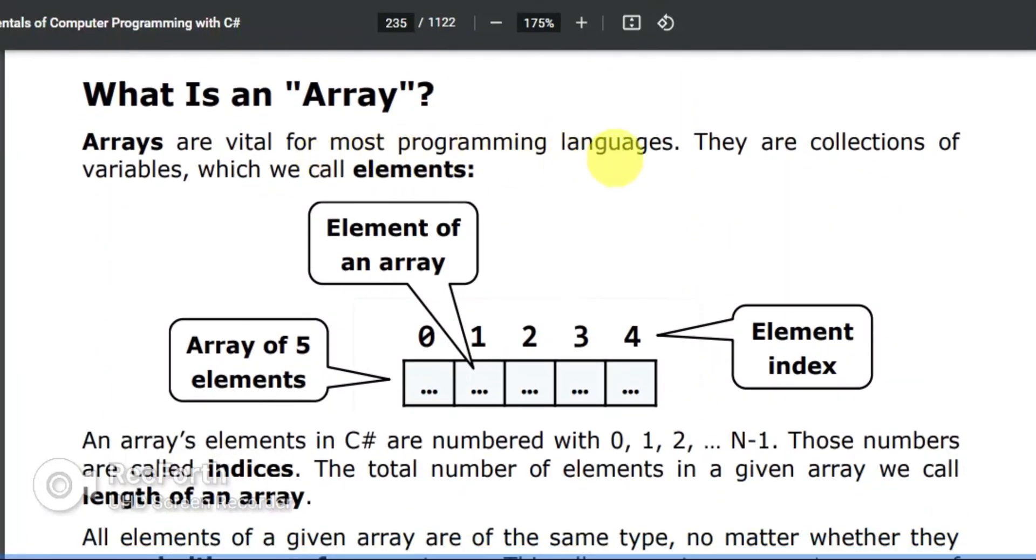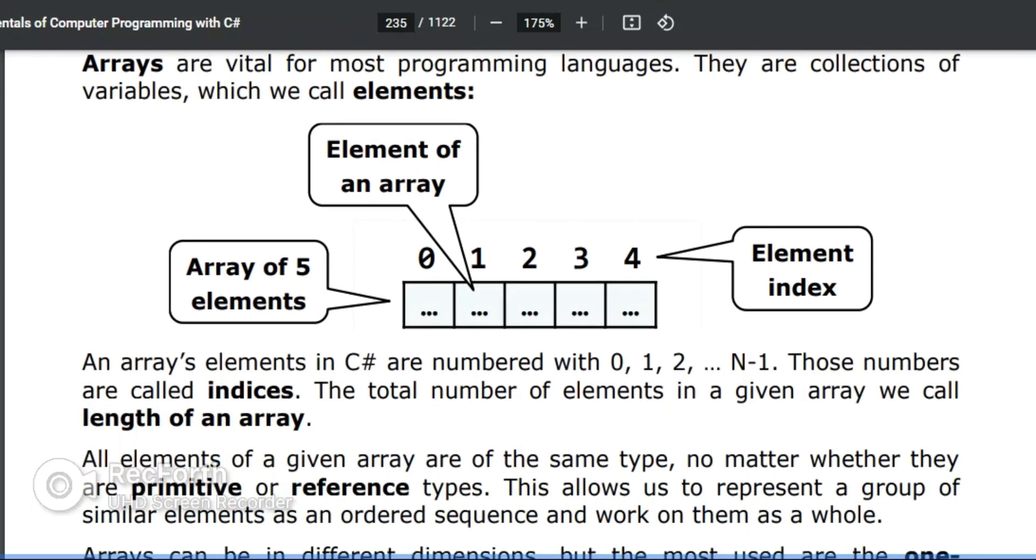Arrays are vital for most programming languages. They are collections of variables which we call elements. Now looking at this particular diagram, you would see that this is an array of five elements. This is the array or element index, and these would be the elements of an array, all present at this particular index.